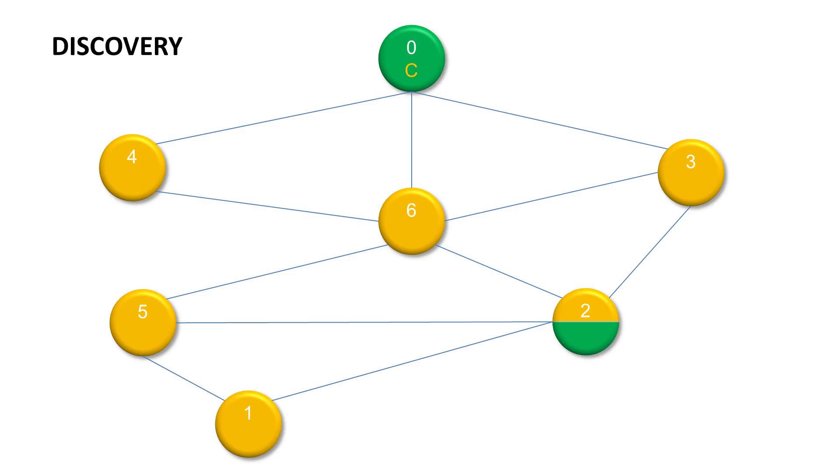Then because number 3 is slower than number 6, number 3 will get virtual routing number 1 and number 6 will get VRN 2. Why we need the VRN will be explained shortly. There is no other routing node in the direct range from the coordinator so the routing zone number 0 is completed.